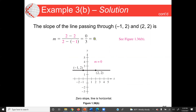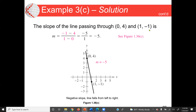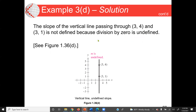Next, the slope of a line passing through (0, 4) and (1, negative 1). Here x1=0, y1=4, x2=1, y2=negative 1. Plugging in the values: negative 1 minus 4 divided by 1 minus 0 gives us negative 5 over 1, equal to negative 5. For the last question with points (3, 4) and (3, 1): the x-values are the same, so the line is vertical. For a vertical line, any value divided by 0 is undefined — a vertical line has an undefined slope.